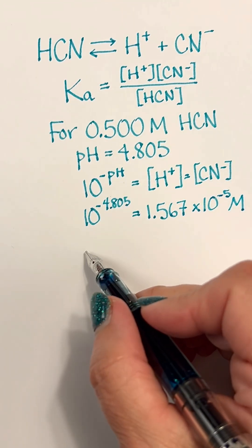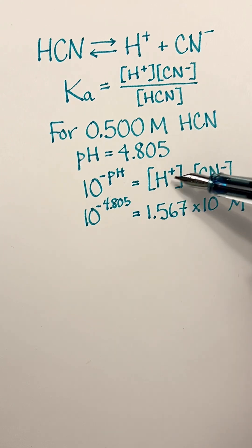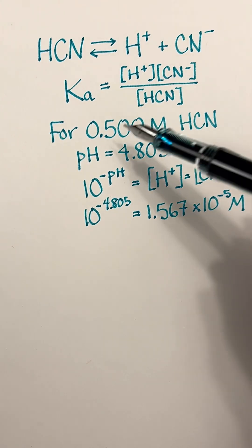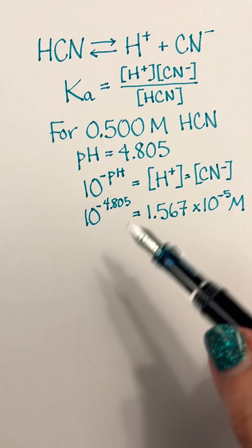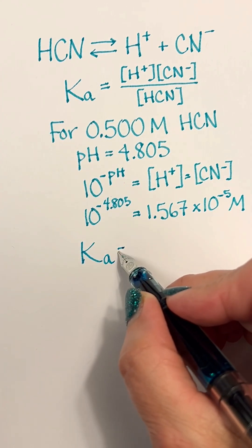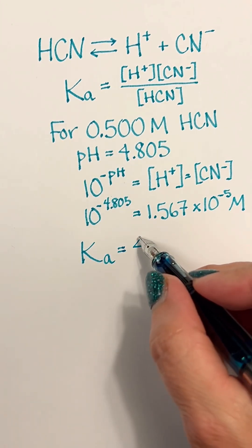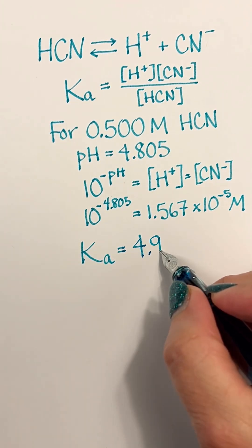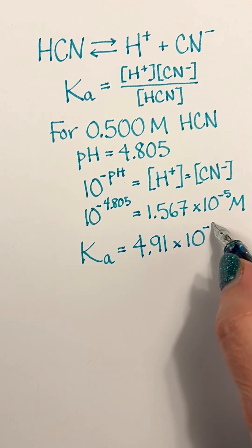So then we can calculate our Ka. We now know the concentration of H plus and CN minus, which we just found. We know the concentration of the original acid, and so we can put those values in. And what we discover is we've got a value of 4.91 times 10 to the minus 10th.